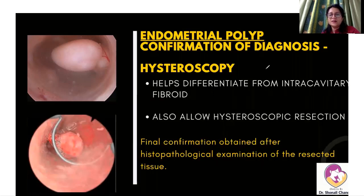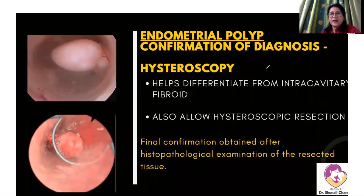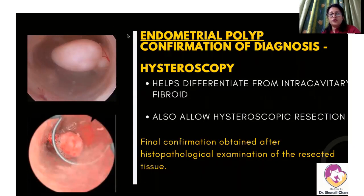One thing we can do for her is Mirena insertion. Mirena is a levonorgestrel-containing intrauterine device that we put inside the uterine cavity. It releases levonorgestrel and can be left there for a period of five to seven years. What this Mirena does is make the endometrium very, very thin because of the progesterone effect, and the woman is relieved of her symptoms for a longer duration of time. That is how we approach the treatment of endometrial polyp.